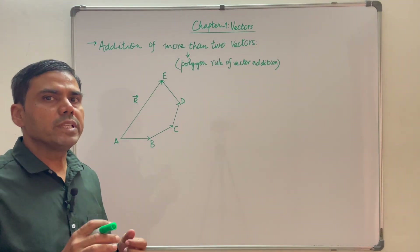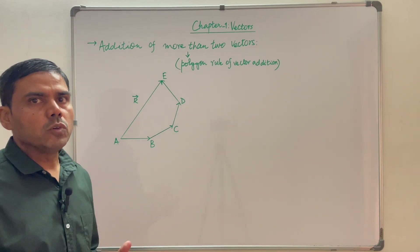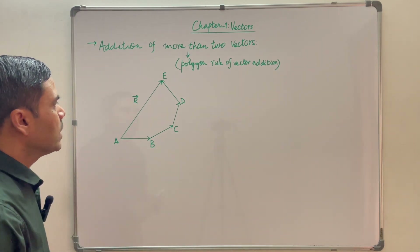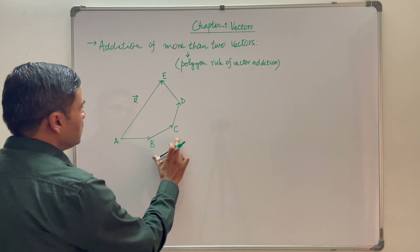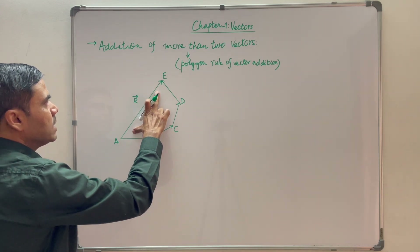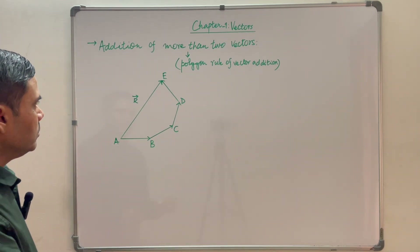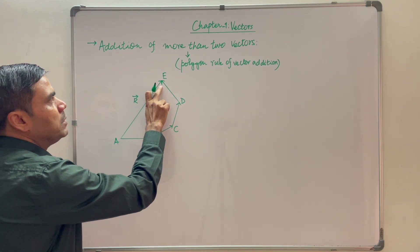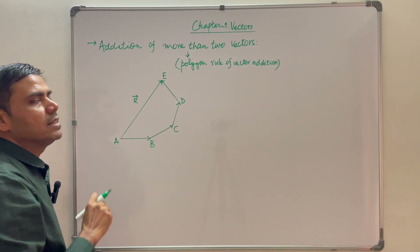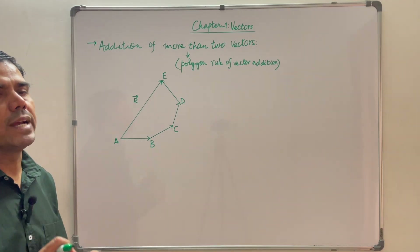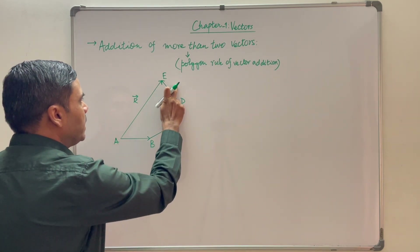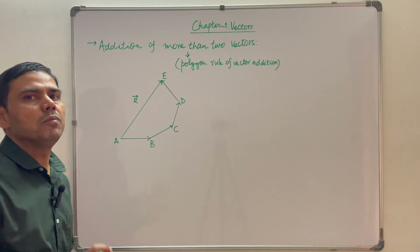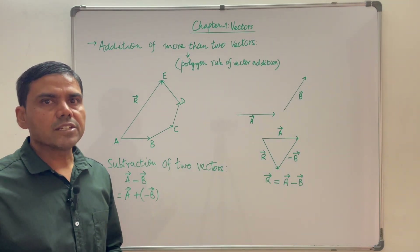Now let us understand the addition of more than two vectors. Addition of more than two vectors follows the polygon law of vector addition, which is an extension of the triangle law. Suppose the vectors are AB, BC, CD, and DE — the resultant R has its tail at the tail of the first vector and its head at the head of the last vector. If these vectors are coplanar, the resultant vector will also be coplanar; if they are not coplanar, the resultant vector will also not be coplanar.